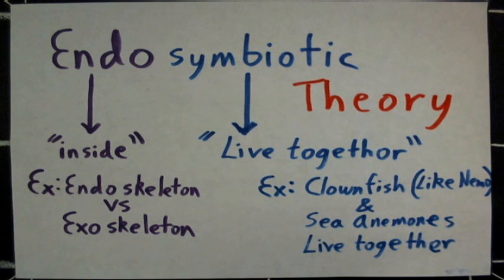So we put these two words together. Endo, symbiotic. Inside, living together. It's when these chloroplasts inside of the cell are living together. Because it turns out that they don't seem to have always been chloroplasts. And same for the mitochondria. They don't seem to have always been mitochondria. So let's look at this a little bit more in depth.